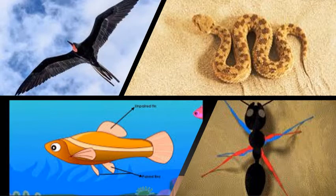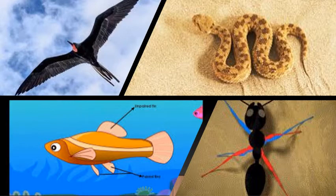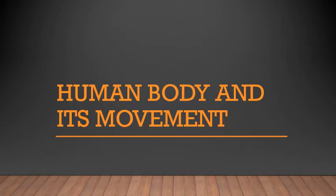Why are there so many differences in the way animals move? Why does a snake slither while a fish swims? It is because our bodies are made differently — we are not all similar. Animals look different from us, and birds and snakes look different from each other. Different kinds of animals move in different ways.